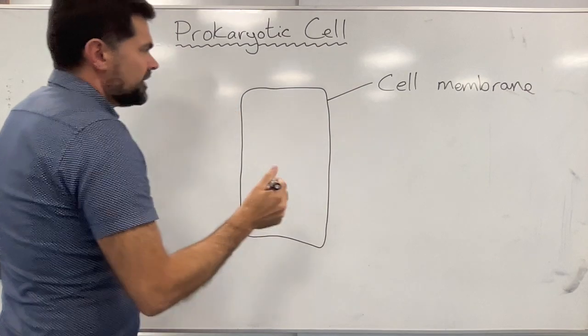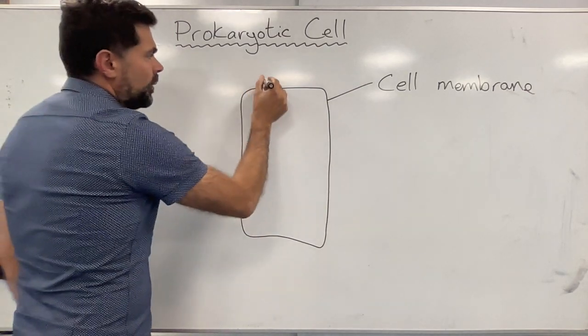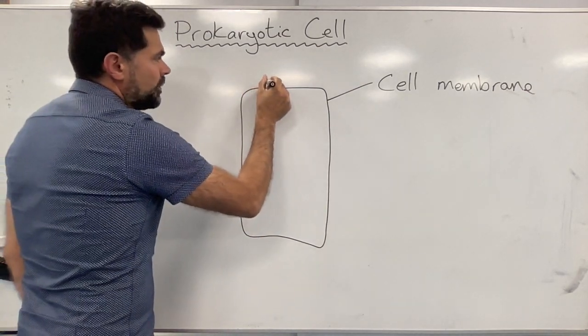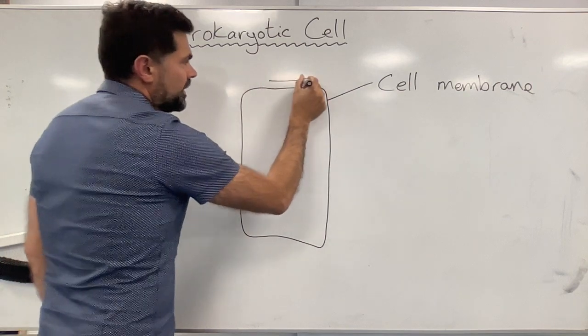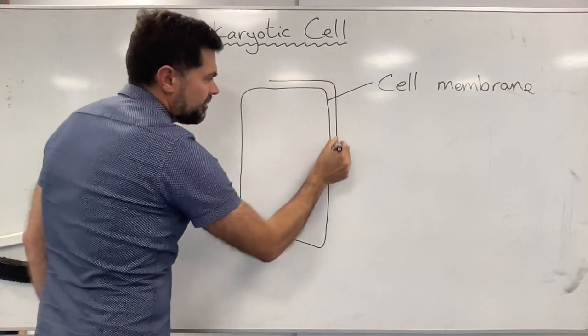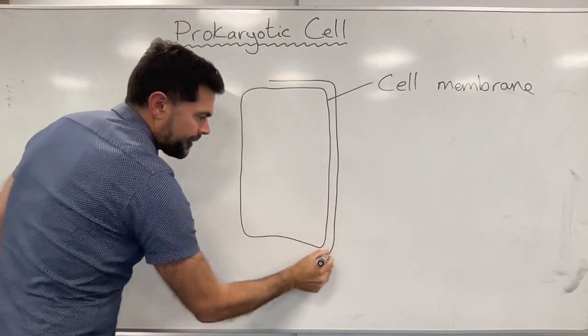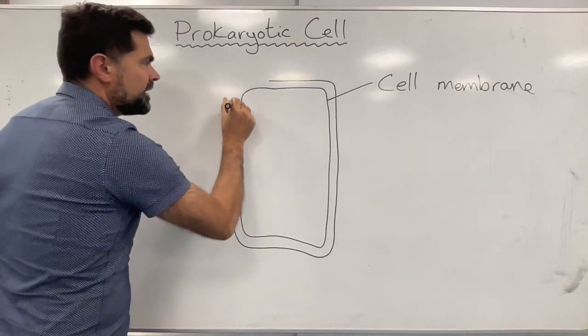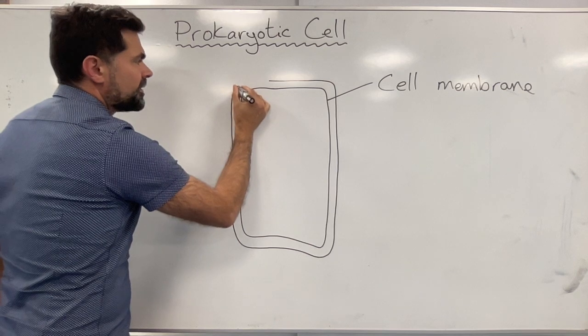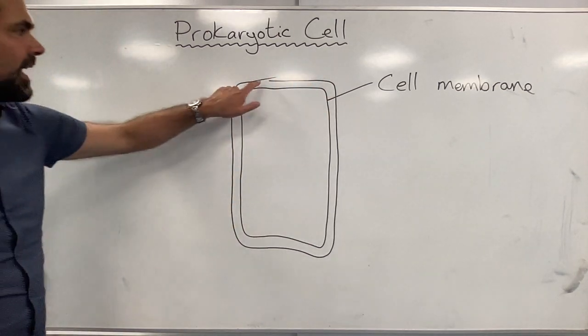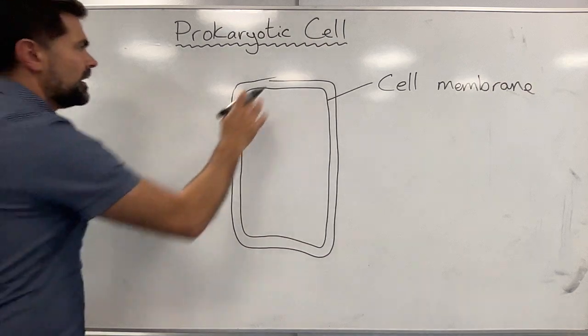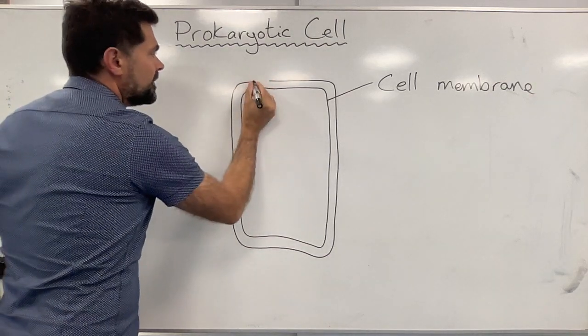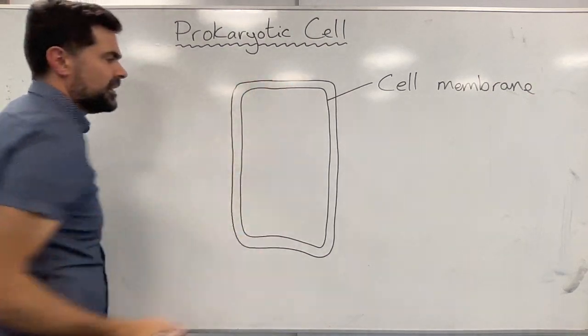Now surrounding the cell membrane there's normally a cell wall. You can draw the cell wall just by drawing a layer around the cell membrane like this. Now try and be accurate when you do your drawings. Don't just make a little gap because you want to finish it off quickly. Try and be accurate when you join up the two lines like this.